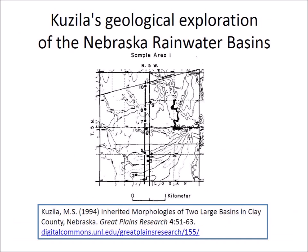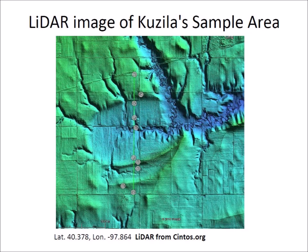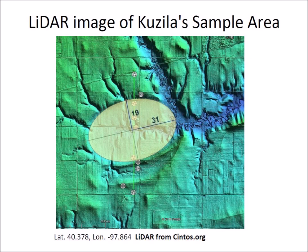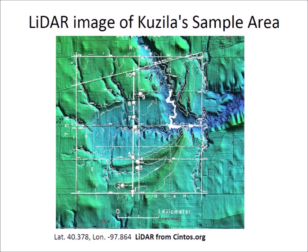The paper announcing that the Nebraska Rainwater Basins were analogous to the Carolina Bays was preceded by a geological exploration of the Nebraska Basins in 1994 by Kuzila. This earlier work drilled 17 test holes in two sample areas to determine loess thickness and stratigraphy. Michael Davias from Sintos.org obtained a LiDAR image for Sample Area 1 with the location of ten test holes. The LiDAR image can be superimposed by an ellipse to demonstrate that even though the eastern portion of the basin is eroded, the rest of the basin preserves its elliptical geometry. This image overlays Kuzila's line drawing on the LiDAR image, showing the locations of ten test holes, and the features from 1994 correlate well with the 2018 LiDAR image.